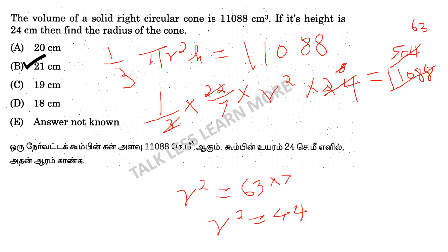441 is r squared, therefore r is equal to 21. The radius of the cone is 21 centimeters, which corresponds to answer option B.